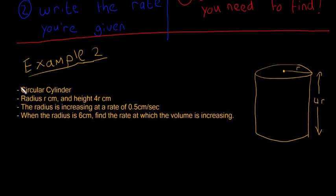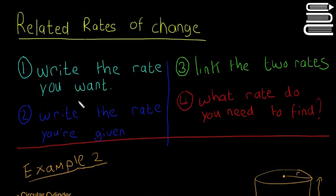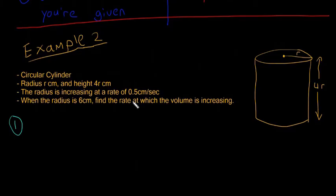We're going to go through our methodology again. The first step is to write the rate that we want. The rate we want is the rate at which the volume is increasing. So volume is V, and the rate of something is with respect to time. So we're going to write dV/dt. That's the rate of change of volume with respect to time, the rate at which the volume is increasing.